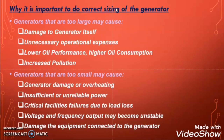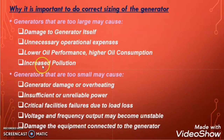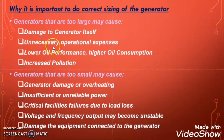When the generator is oversized, the fuel combustion is partial — so lower oil performance and higher oil consumption result. As the fuel is burning partially, it will create more smoke and more soot, increasing pollution. Also, for a little load you have to operate a bigger generator, which will definitely increase your operational expenses unnecessarily. These are the disadvantages of oversizing a diesel generator.